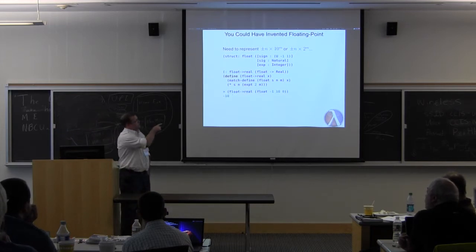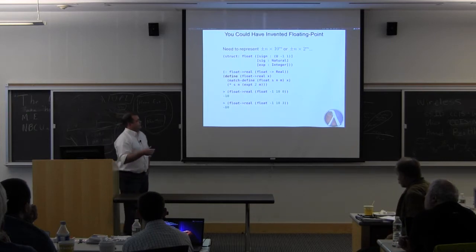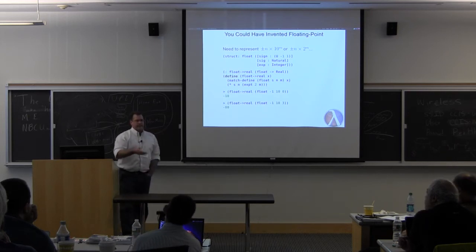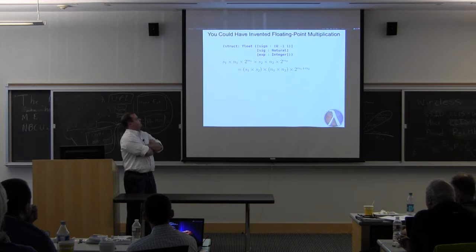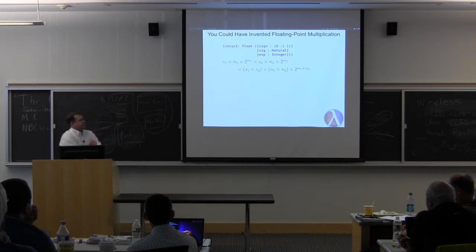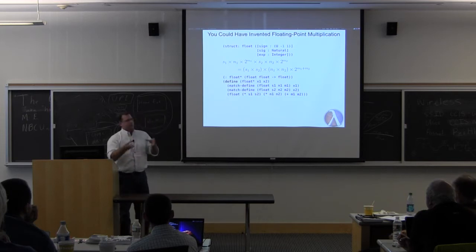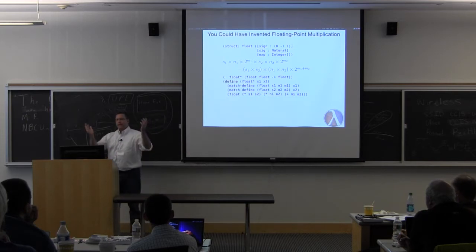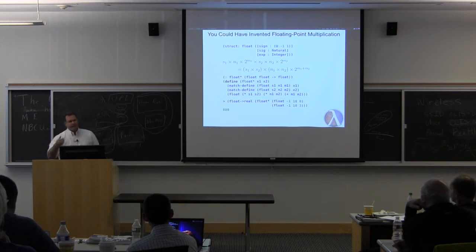Number negative 10 is just negative 1 sine times 10 times 2 to the 0, which is of course 1. And then the number negative 80 is negative 1 times 10 times 2 cubed, which is of course 8. Floating point multiplication is very simple, provided that you remember that when you multiply 2 to the m1 and 2 to the m2, it's the same as 2 to the m1 plus m2. And you could write your floating point multiplication function just like this. Pull all the fields out, multiply the signs, multiply the significance, add the exponents, and you're finished. Yee-haw! So negative 10 times negative 80 is 800, as we should expect.